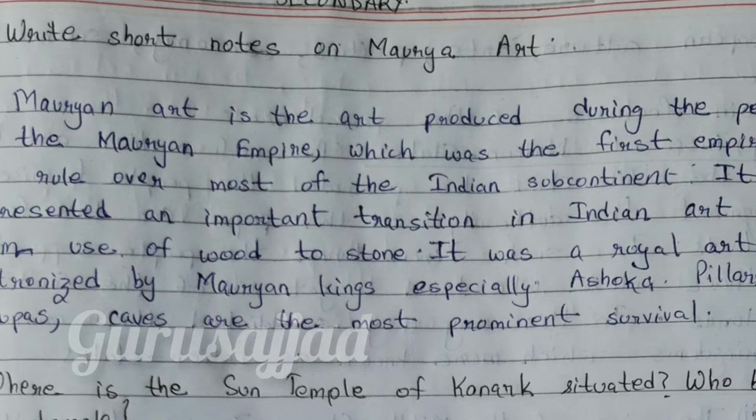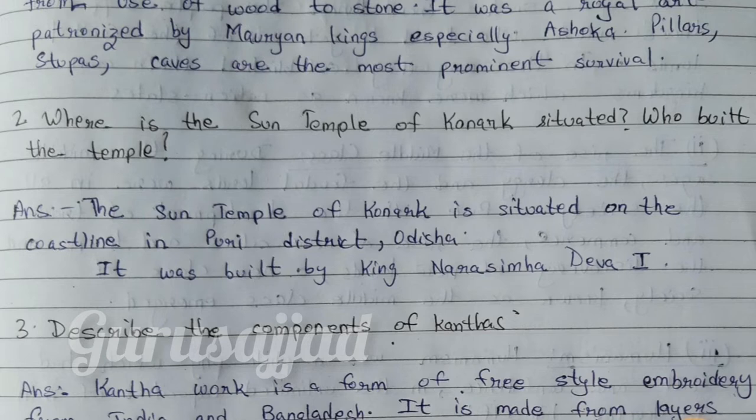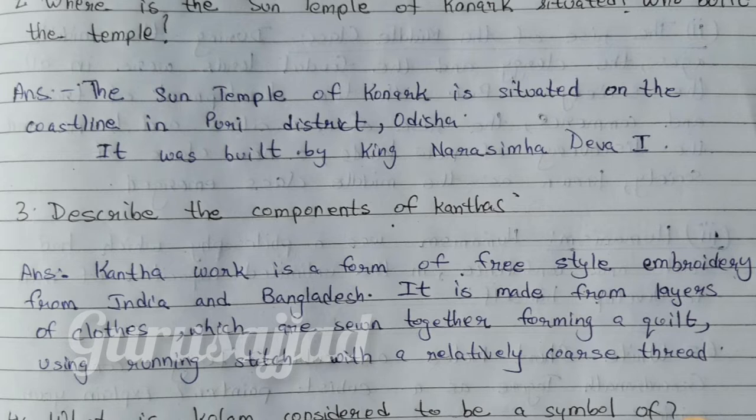Question number 2: Where is the Sun Temple of Konark situated, and who built the temple? Answer: The Sun Temple of Konark is situated on the coastline in Puri district, Odisha. It was built by King Narasimha Deva I.